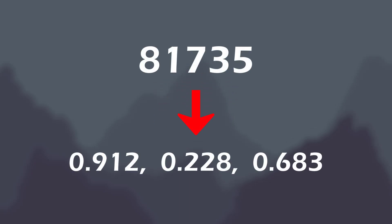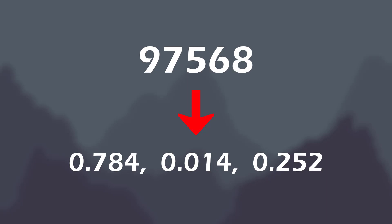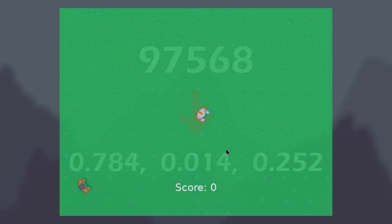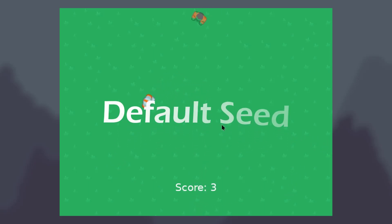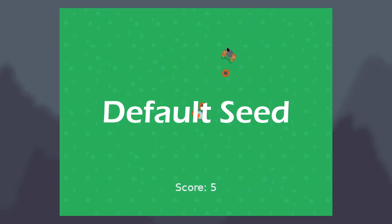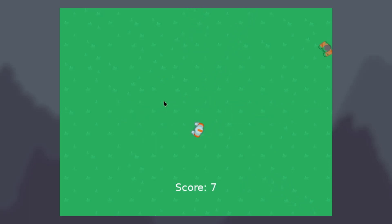The problem comes into play when the seed is not set correctly. The randomness algorithm works by using some value called the seed to output the list of numbers. Each seed you give it will result in different random numbers generated. But if you give it the same seed over and over again, it'll keep spitting out the same pattern of numbers. And that's what's happening in this zombie game — the question asker and my video were all using the same default seed, meaning that each call to math.random would result in the same sequence of numbers.